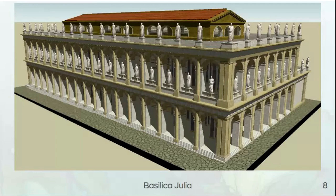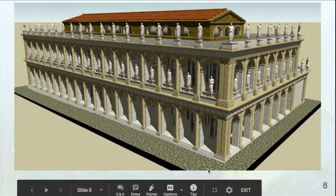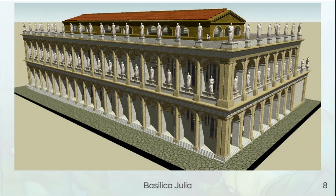Here we have the Basilica Julia. This is a modern rendering of what this building would have looked like. We do have some details on what the building itself looked like, but unfortunately the building itself is no longer standing. You can see a series of vaults running along the outside, columns, and three levels with lots of windows at the top, which would have let in light and air.